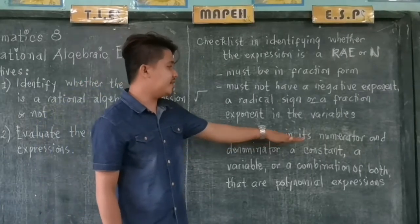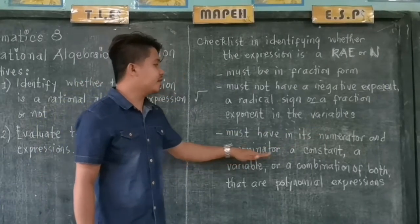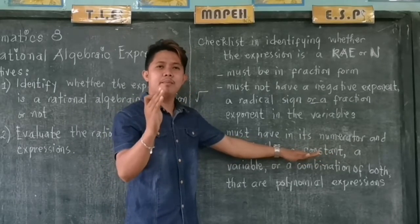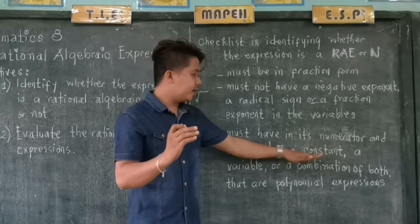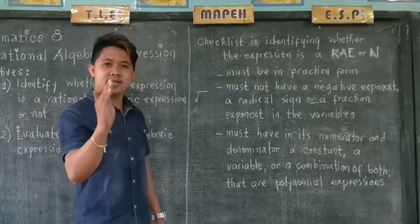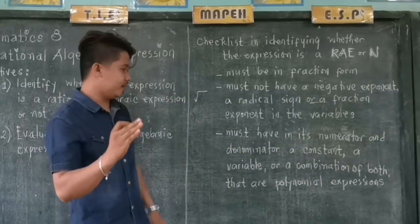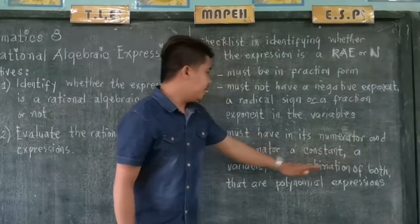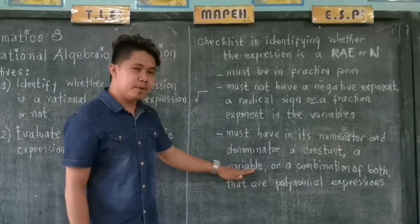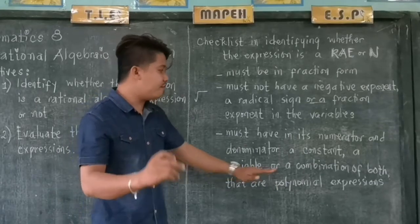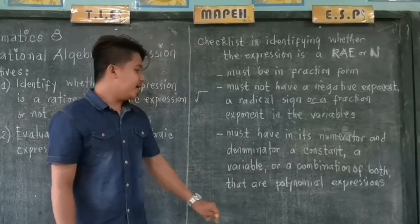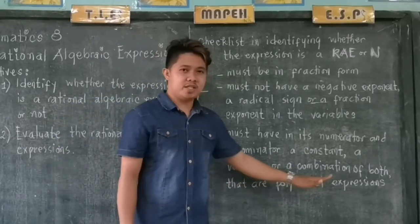Next, it must have in its numerator and denominator a constant. When we say constant, it is simply a number without a variable — without X, Y, or any letters in the alphabet. Then, it also has a variable or a combination of both a constant and a variable that are polynomial expressions.